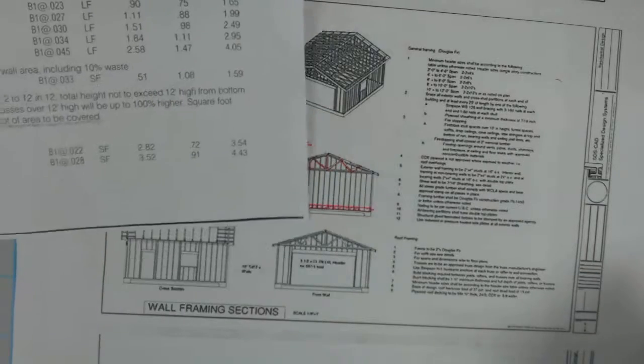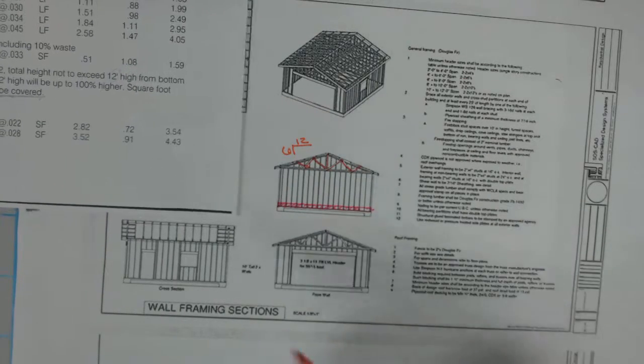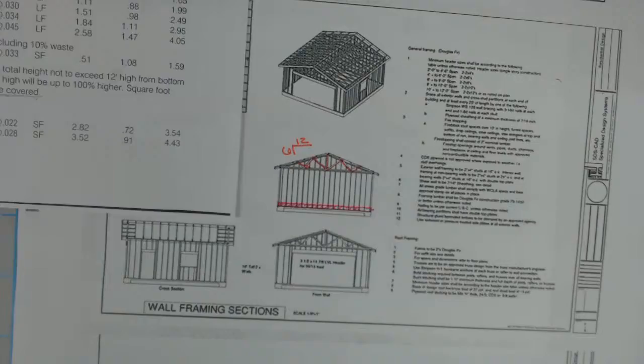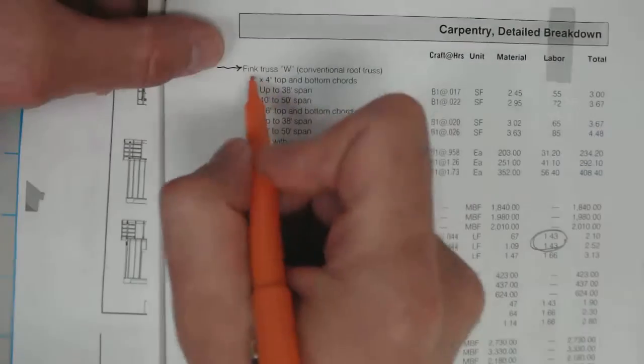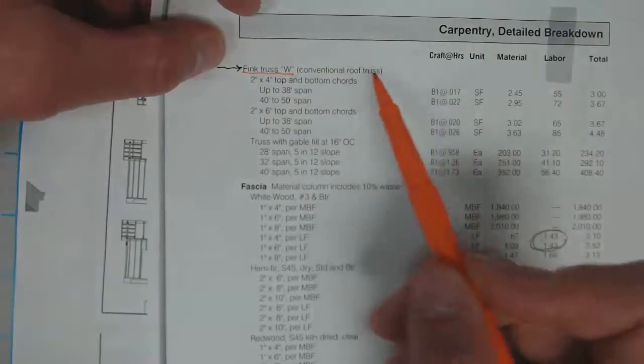We're going to assume it's a fairly average pitch, a little steeper for the Michigan area with a lot of rain. Then we can slide over to the section that gives us a fink or W truss conventional roof truss.